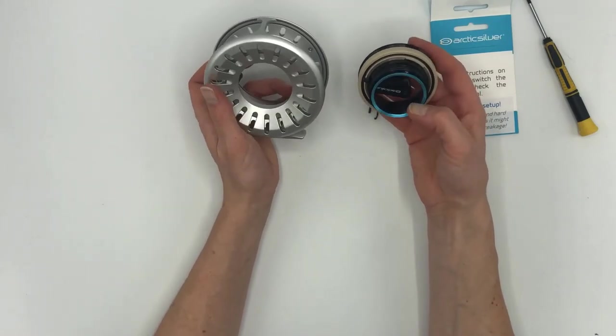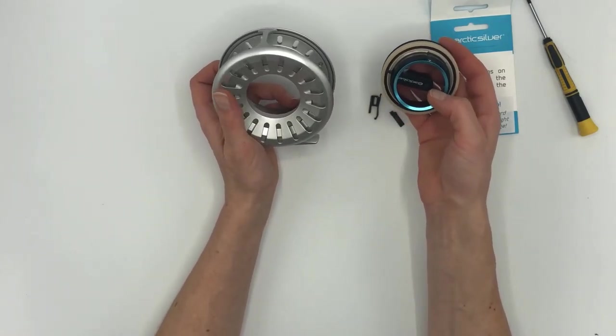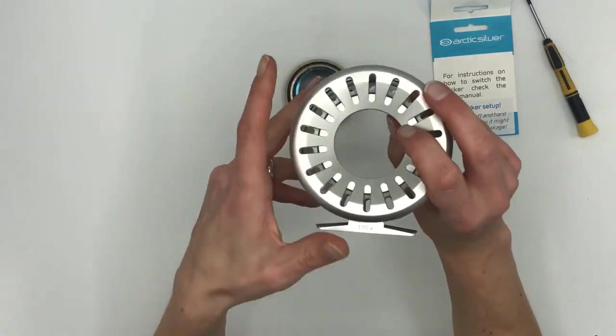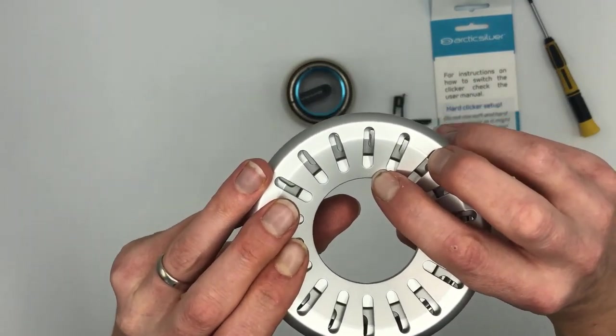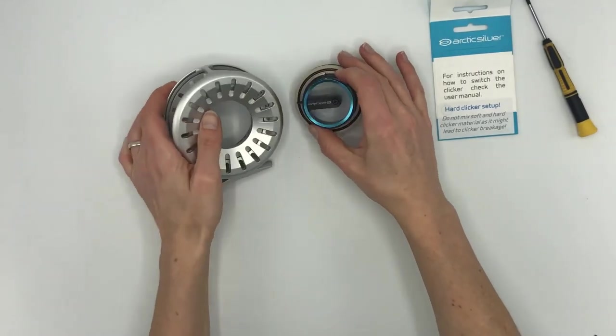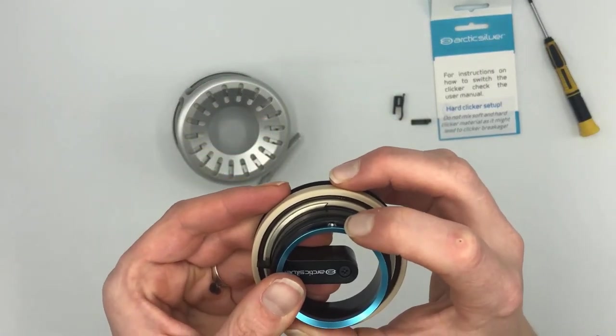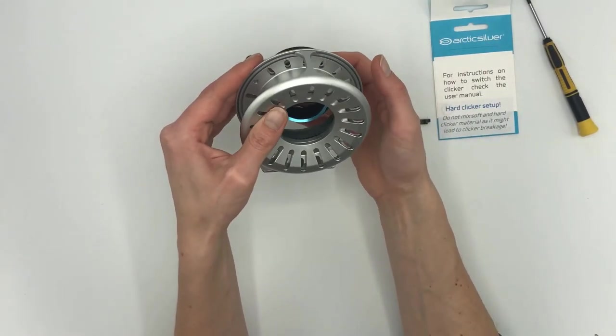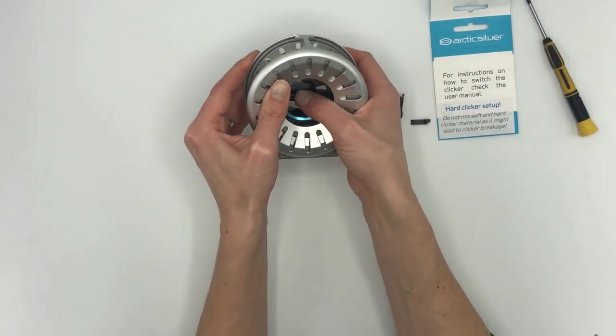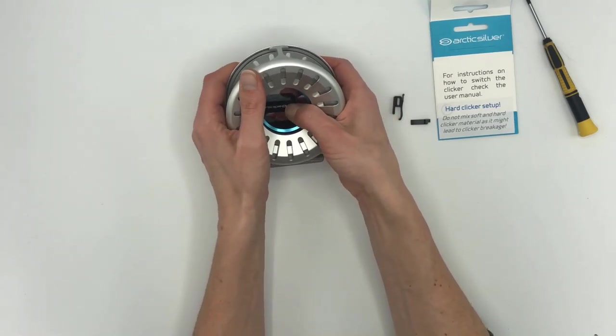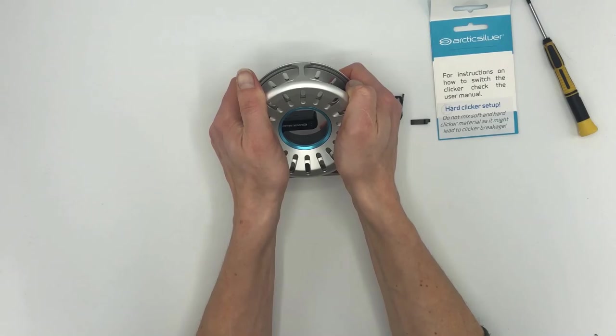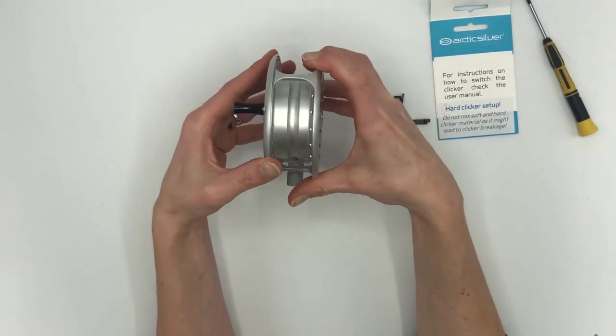To assemble the center hub into the frame again, you see that you have a little dot right here and then you have a small dot also on the center hub right there. To assemble them, you should make sure that these dots are pointing directly towards each other before you give it a push. There you go, ready to go.